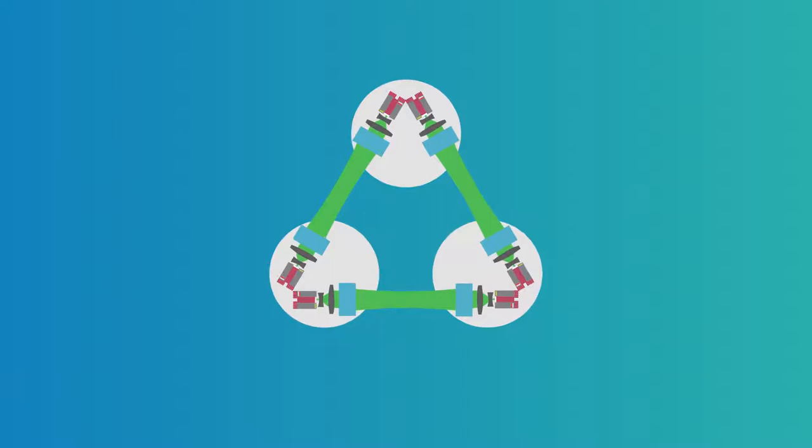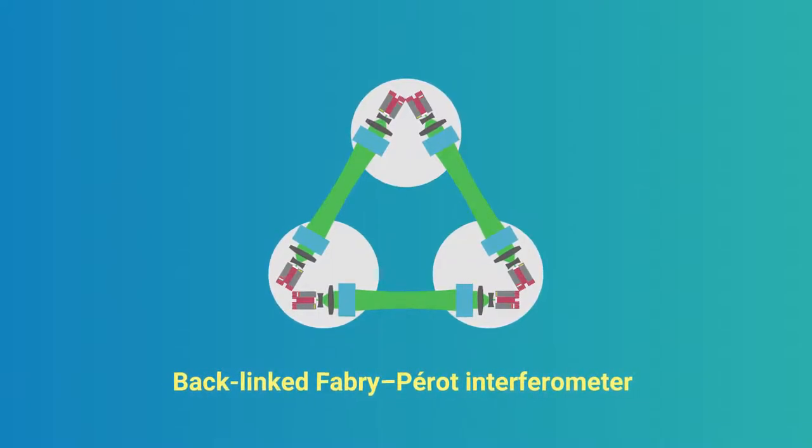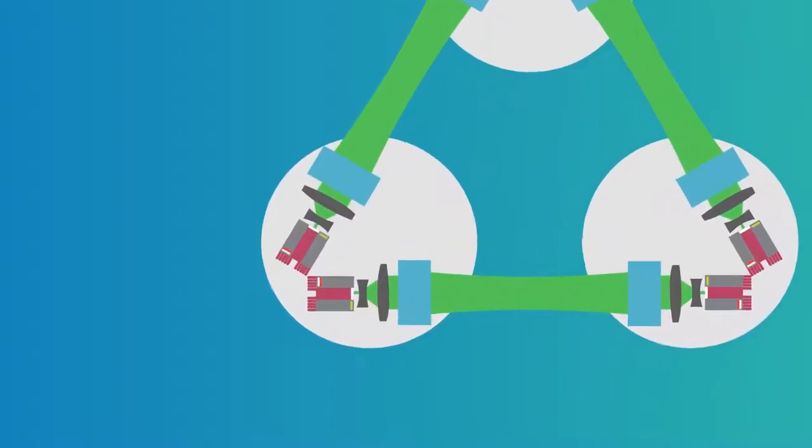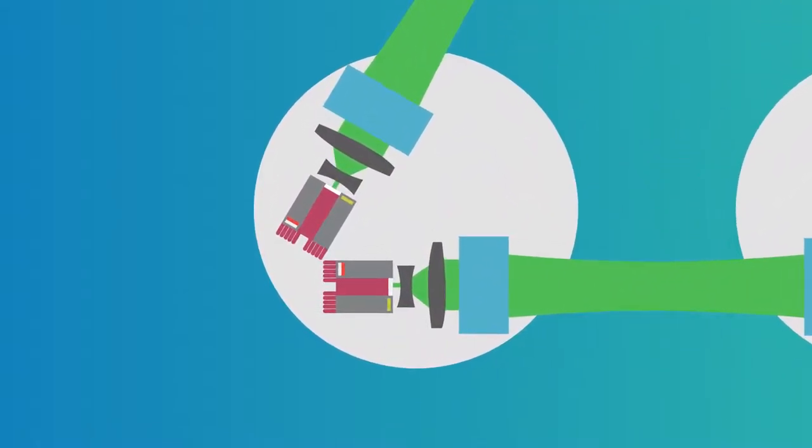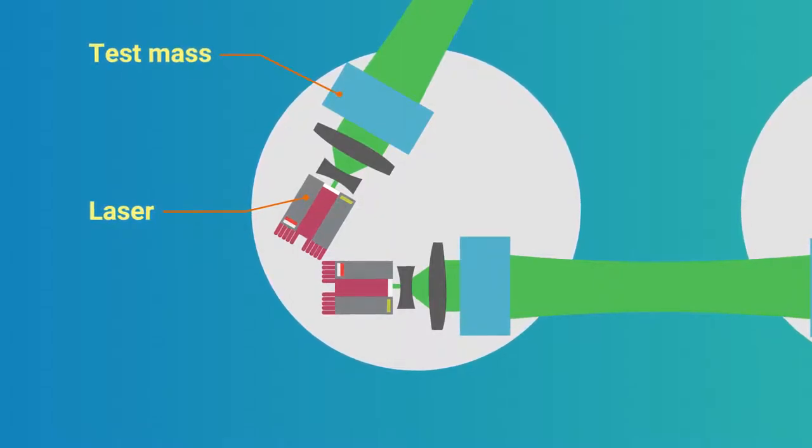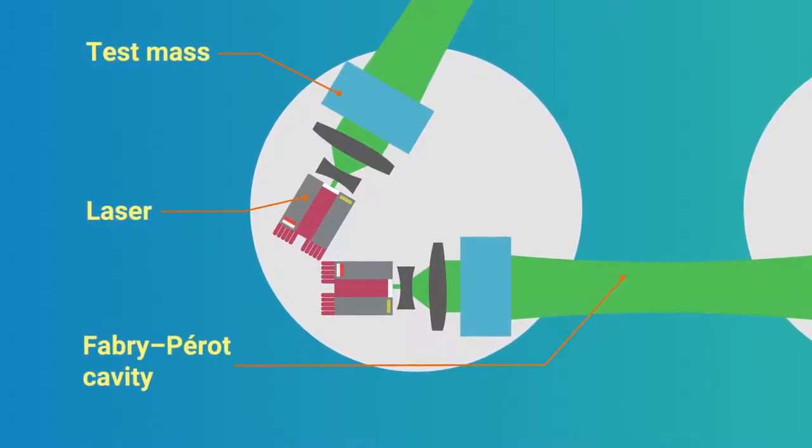Their topology was named the Backlinked Fabry-Perot Interferometer. It consists of three identical spacecrafts, each carrying two independent laser sources and two test masses for a total of three Fabry-Perot cavities.